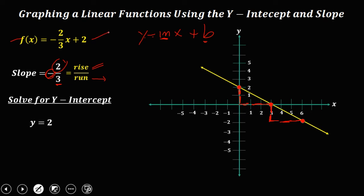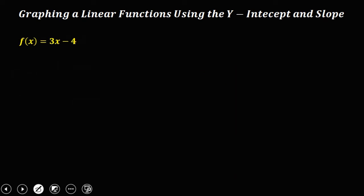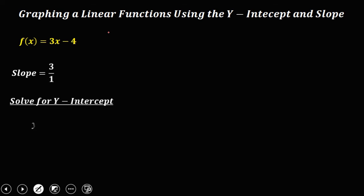For this given function, f(x) equals 3x minus 4. So the slope is 3 over 1, and the y-intercept is negative 4.